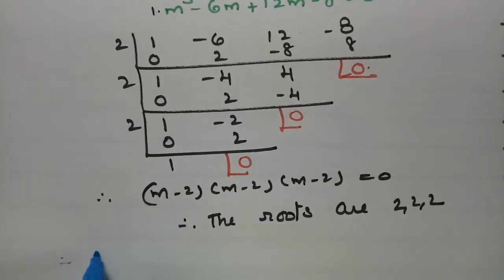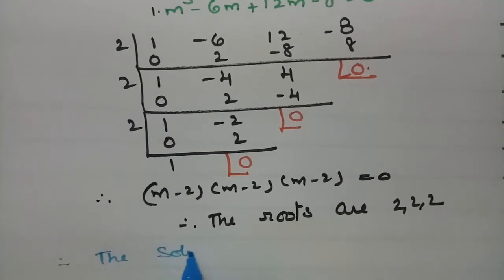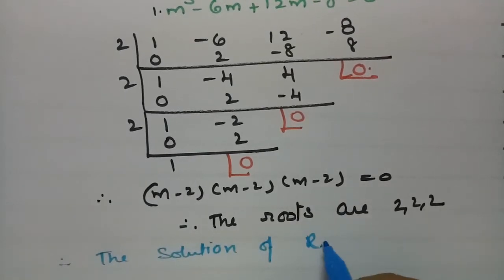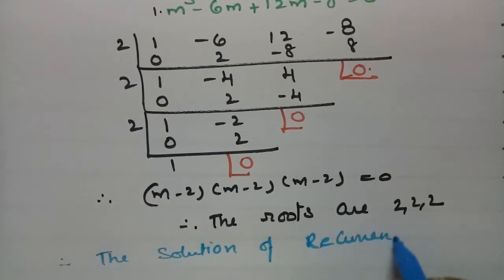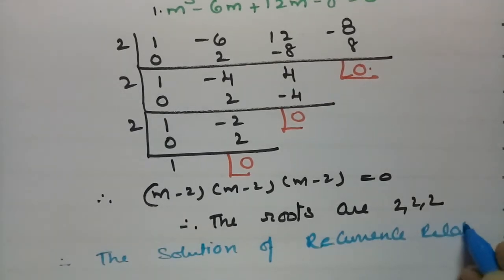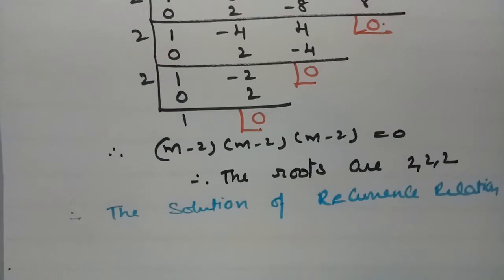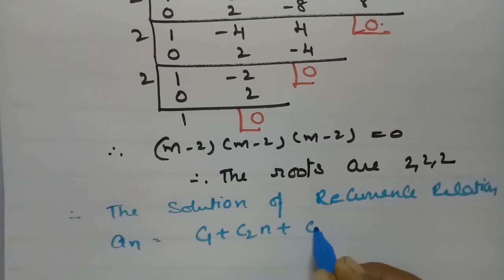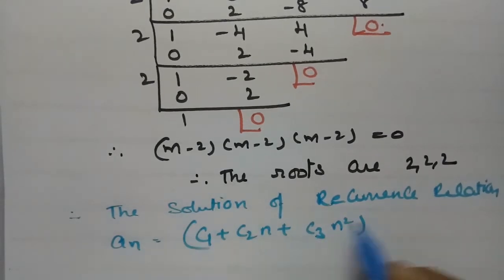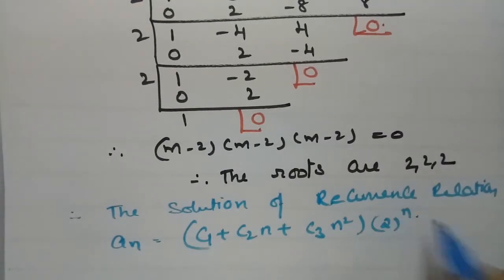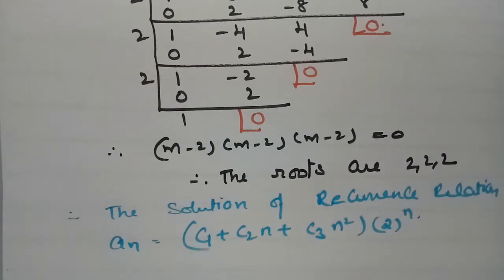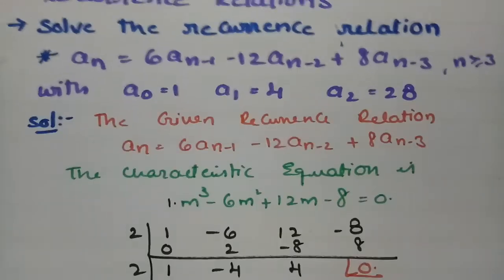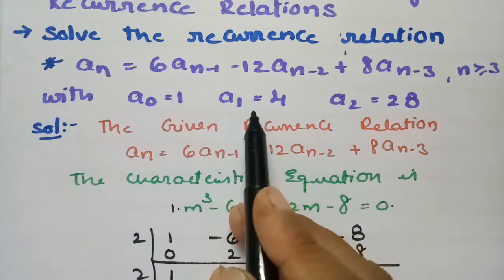Therefore the roots are m = 2, 2, 2 — three equal roots. Since the roots are real and equal, the general solution of the recurrence relation is: a_n = (c_1 + c_2·n + c_3·n²) · 2^n.